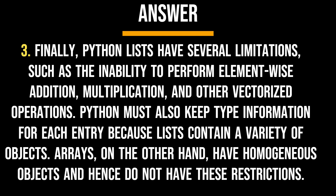3. Finally, Python lists have several limitations, such as the inability to perform element-wise addition, multiplication, and other vectorized operations. Python must also keep type information for each entry because lists contain a variety of objects. Arrays, on the other hand, have homogeneous objects and hence do not have these restrictions.